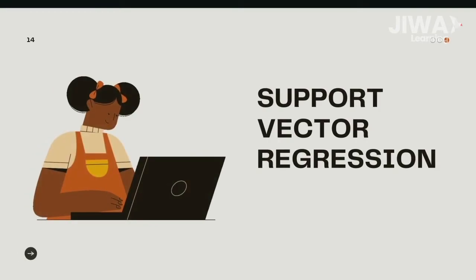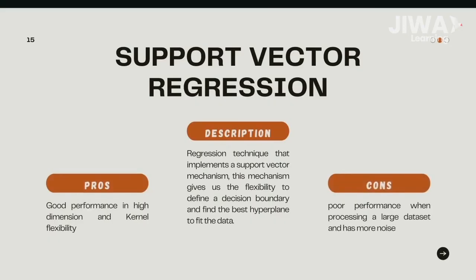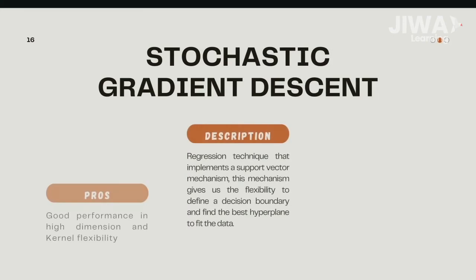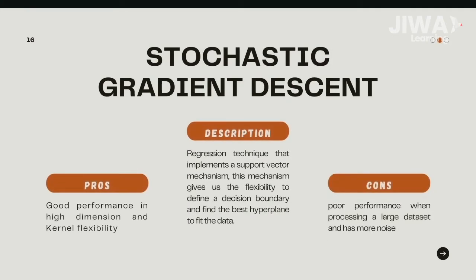Support vector regression is a regression technique that implements the support vector mechanism, which gives us flexibility to define a decision boundary and find the best hyperplane to fit the data. Stochastic gradient descent picks a random instance of training data at each step and then computes the gradient, making it much faster as there is much less data to manipulate at a single time.